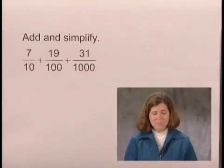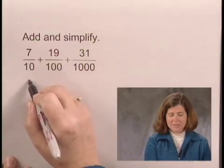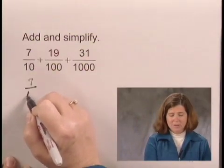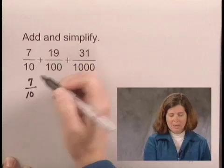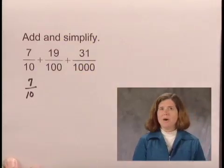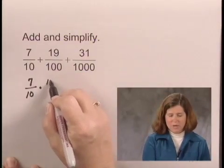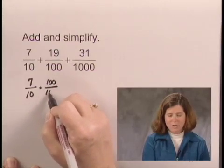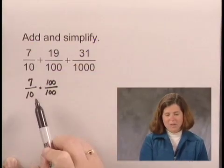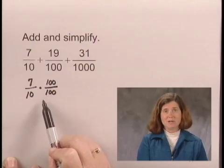Which will become the common denominator of the fractions. So we want to write 7 tenths with the denominator of 1,000. In order to do so, we multiply by 1, and we choose the form for 1, 100 over 100, so that when we multiply denominators, we will have a denominator of 1,000.